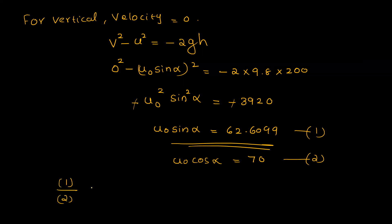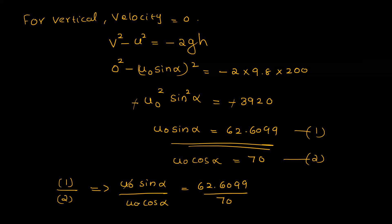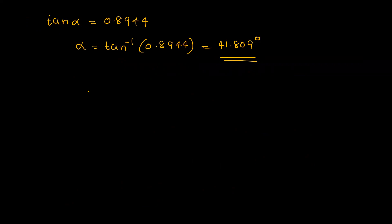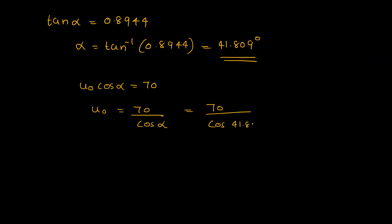Dividing equation 1 by equation 2: u0·sin alpha divided by u0·cos alpha equals 62.6099 divided by 70, giving tan alpha equal to 0.8944. So alpha equals approximately 41.809 degrees. Then u0 equals 70 divided by cos(41.809), which equals 93.912 metres per second.